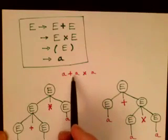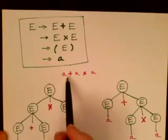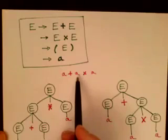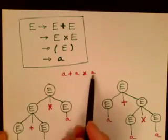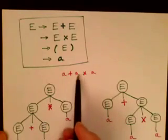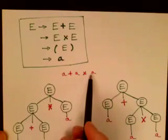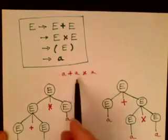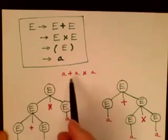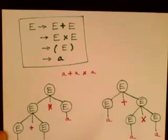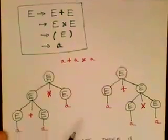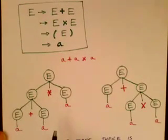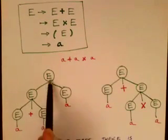In arithmetic class, when you were younger, you learned that multiplication should have precedence over addition — you should do the multiplication operation first and then do the addition. But with this grammar, notice that this particular expression, this particular string in the language, has two different parse trees. Here's the first one.